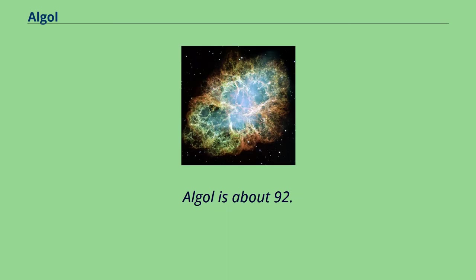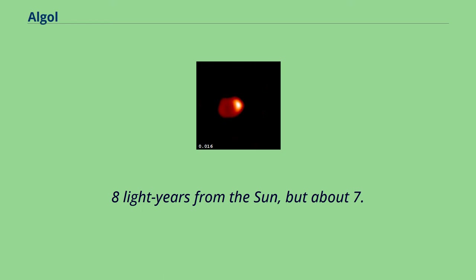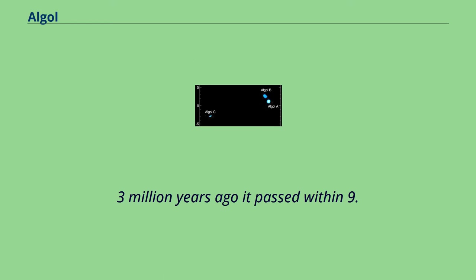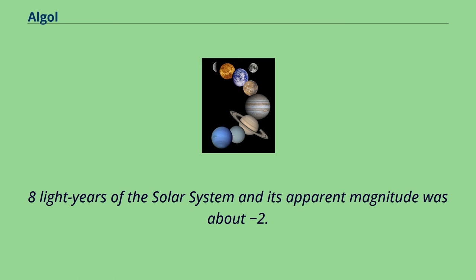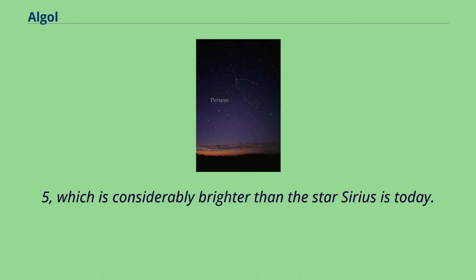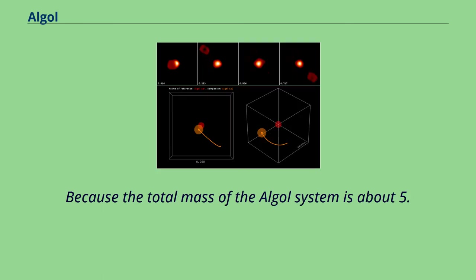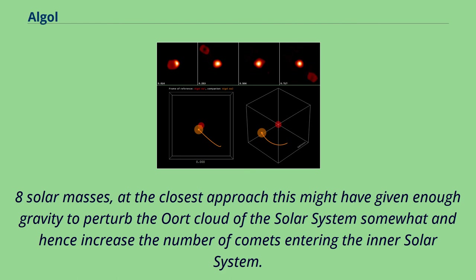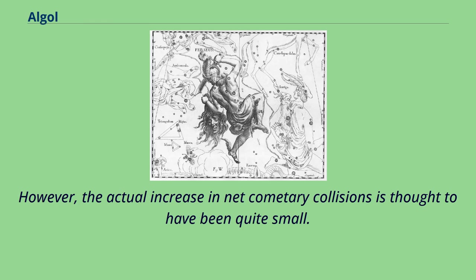Algol is about 92.8 light-years from the Sun, but about 7.3 million years ago it passed within 9.8 light-years of the solar system and its apparent magnitude was about minus 2.5, which is considerably brighter than the star Sirius is today. Because the total mass of the Algol system is about 5.8 solar masses, at the closest approach this might have given enough gravity to perturb the Oort cloud of the solar system somewhat and hence increase the number of comets entering the inner solar system. However, the actual increase in net cometary collisions is thought to have been quite small.